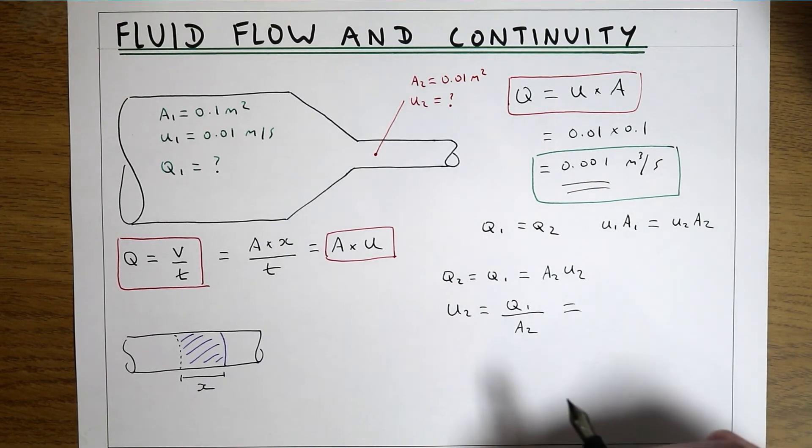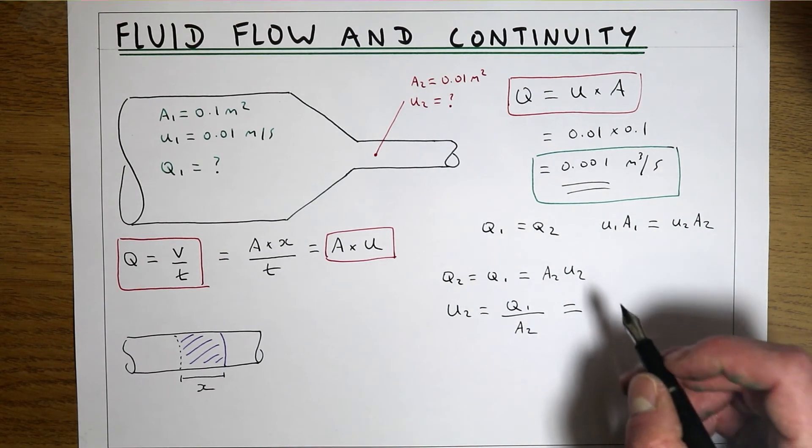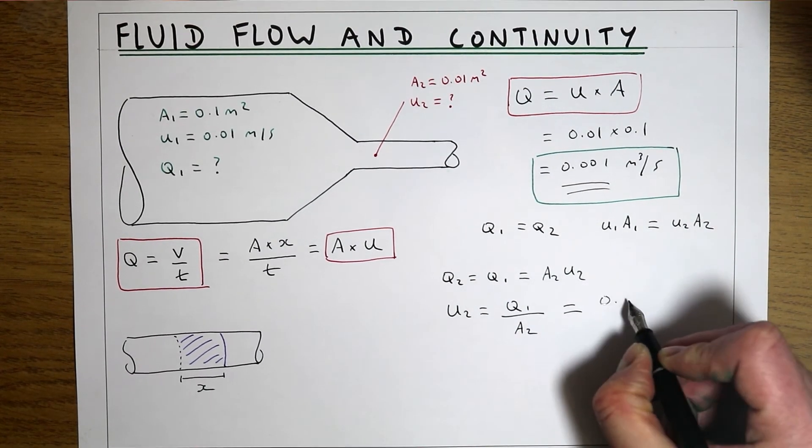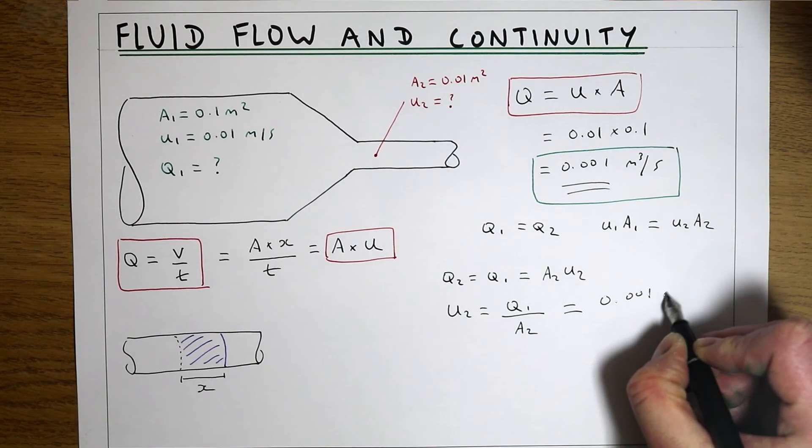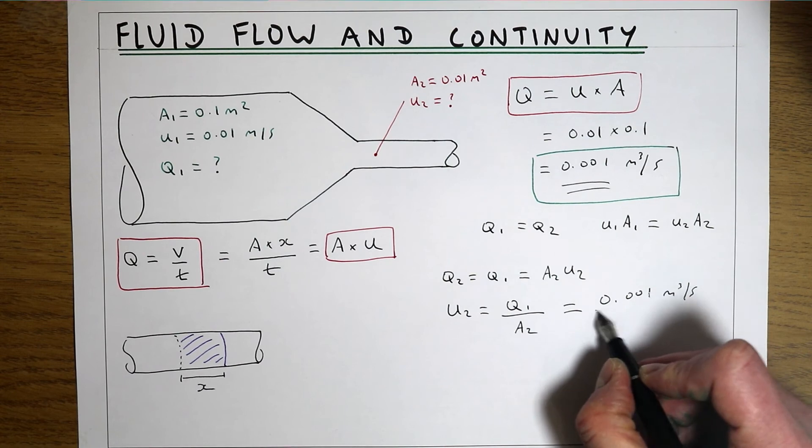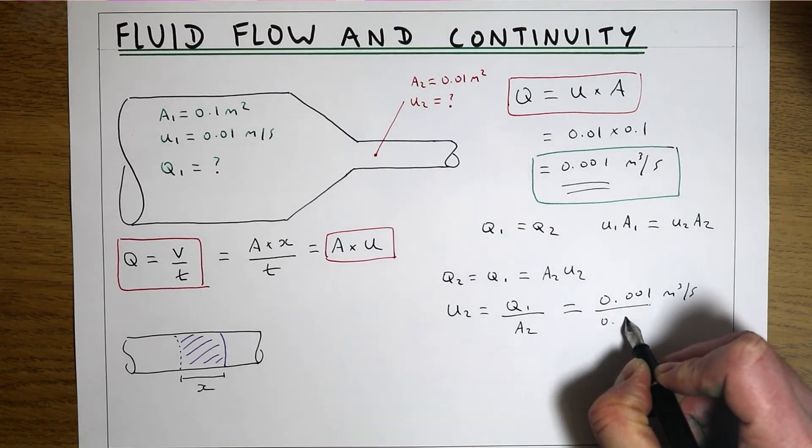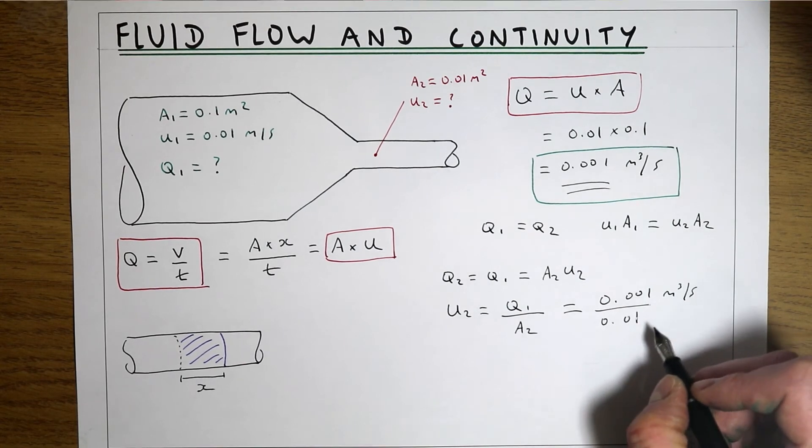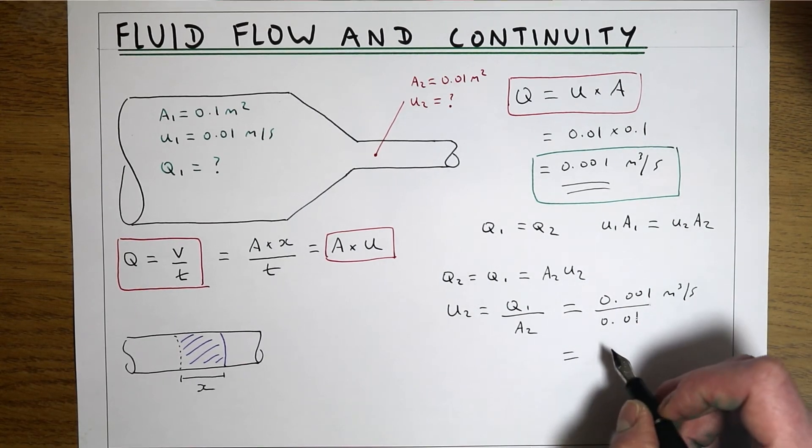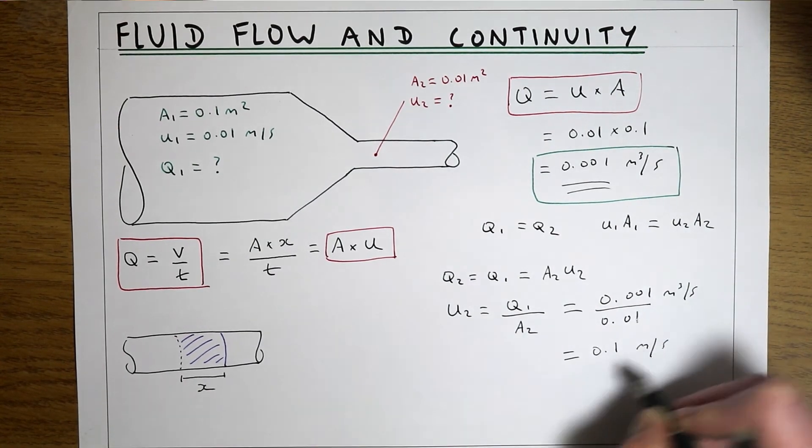From continuity we can work out the velocity at point 2, which is going to be 0.001 m³/s, which is both Q1 and Q2, divided by the area at point 2, which is 0.01 m², which gives us a velocity at point 2 of 0.1 m/s.